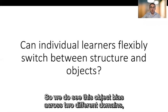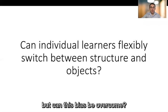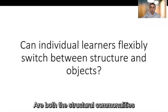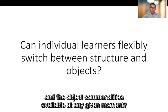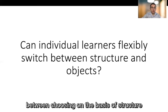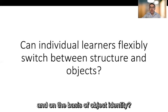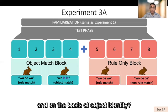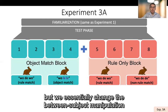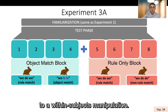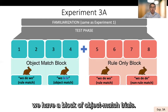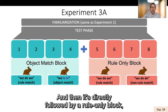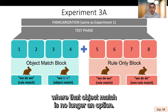So we do see this object bias across two different domains, but can this bias be overcome? Are both the structural commonalities and the object commonalities available at any given moment? In other words, can individual learners flexibly switch between choosing on the basis of structure and on the basis of object identity? So to test this, we replicate experiment one, but we essentially change the between-subject manipulation to a within-subject manipulation. So in the test phase, we have a block of object match trials, and then it's directly followed by a rule-only block, where that object match is no longer an option. And so what we're really interested in is to see whether object choosers from the first block will switch and become rule choosers in that second block.